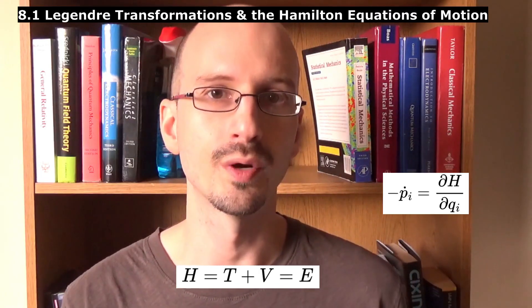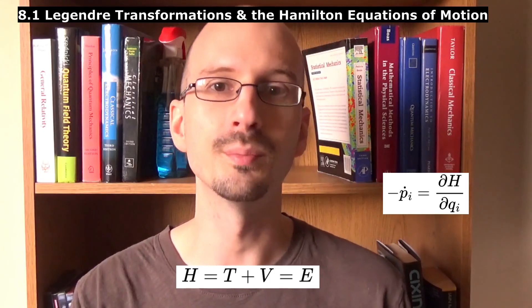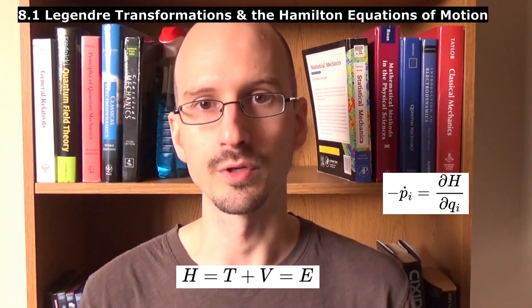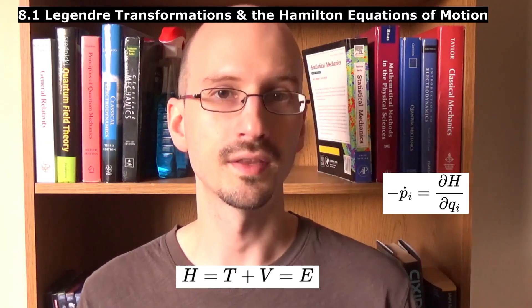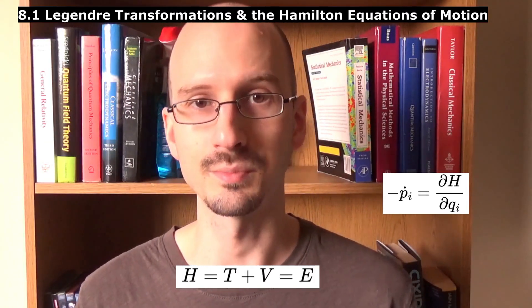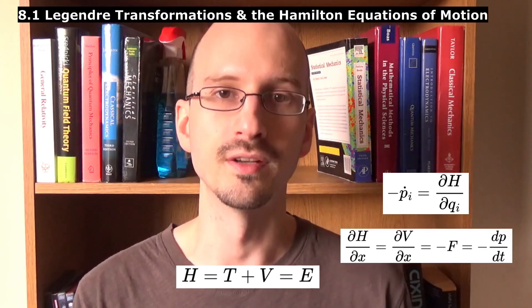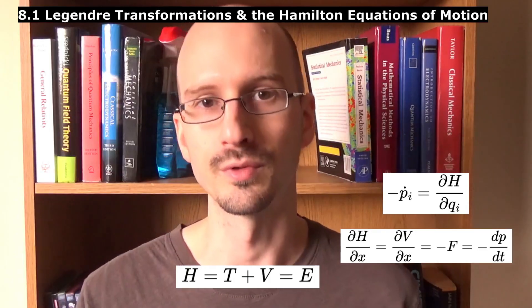The momentum change equation tells us that the change in momentum is equal to the derivative of the Hamiltonian with respect to position. The kinetic energy does not depend explicitly on position, and so the change in momentum is equal to the derivative of the potential with respect to position.